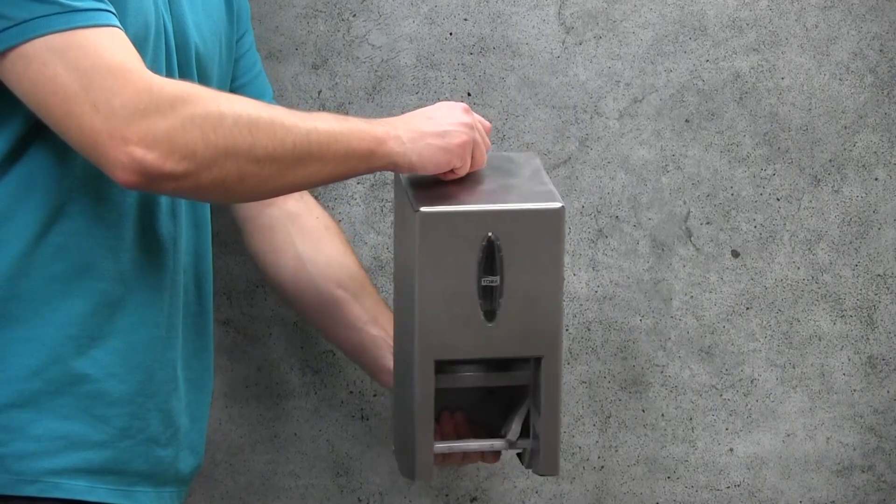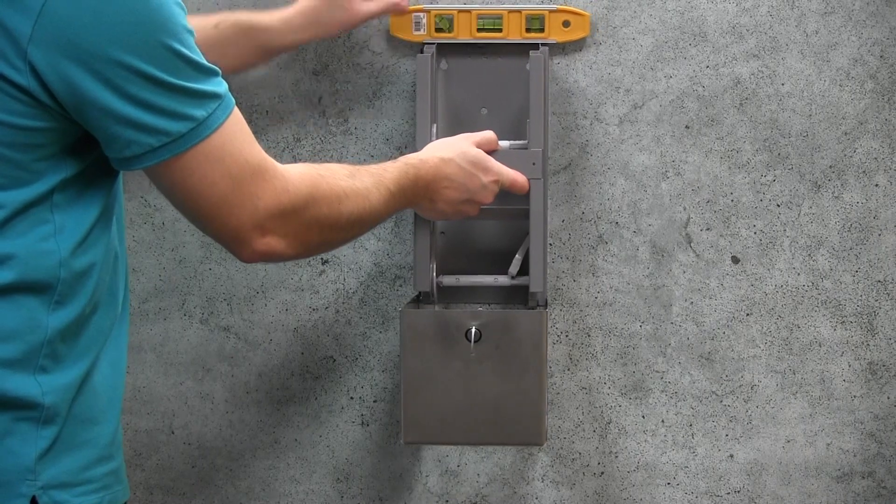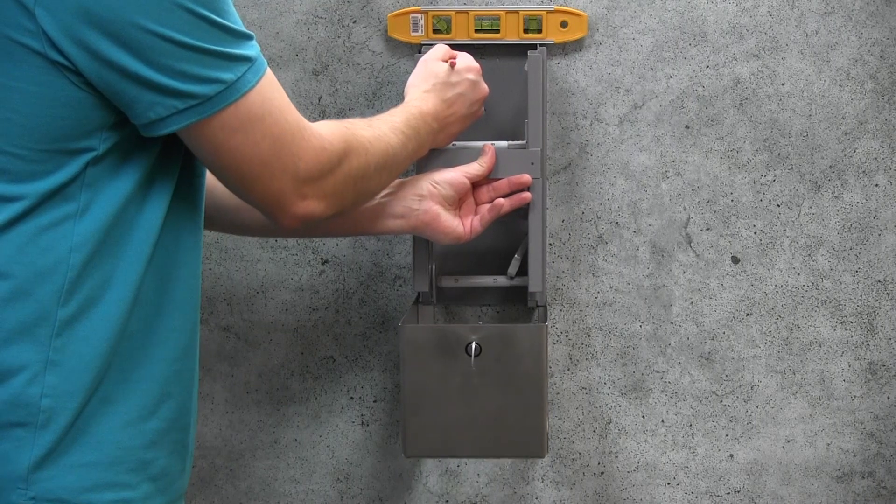Installing the dispenser. Open the dispenser using the key provided. Hold the dispenser against the wall using the level to keep the dispenser straight and mark the mounting holes.